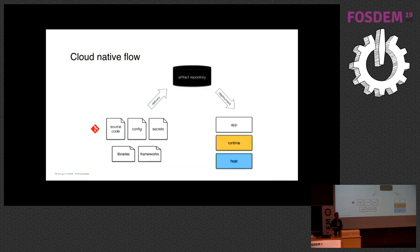How does the overall development and deployment flow look like in cloud-native land? We have a couple of things: source code, configuration, and secrets — API keys, database passwords, or whatever. Then we have dependencies: libraries, frameworks, the JavaScript framework of the day. And hopefully everything is in version control.